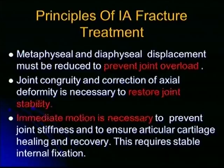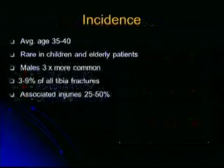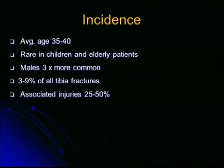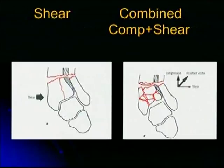The AO classification most popularly used is: A-type for extra-articular, B-type for partial articular, and C-type for complete articular. The incidence is usually in young adults, rare in children and elderly patients. Males are more affected, and it involves 3–9% of all tibia fractures with associated injuries in 25–50%. The mechanism of injury is usually a compression fracture. You may have a varus or valgus component — with a varus component you have more comminution with an oblique fracture without a fibula fracture, and in valgus you have less comminution but with an oblique fracture of the fibula.